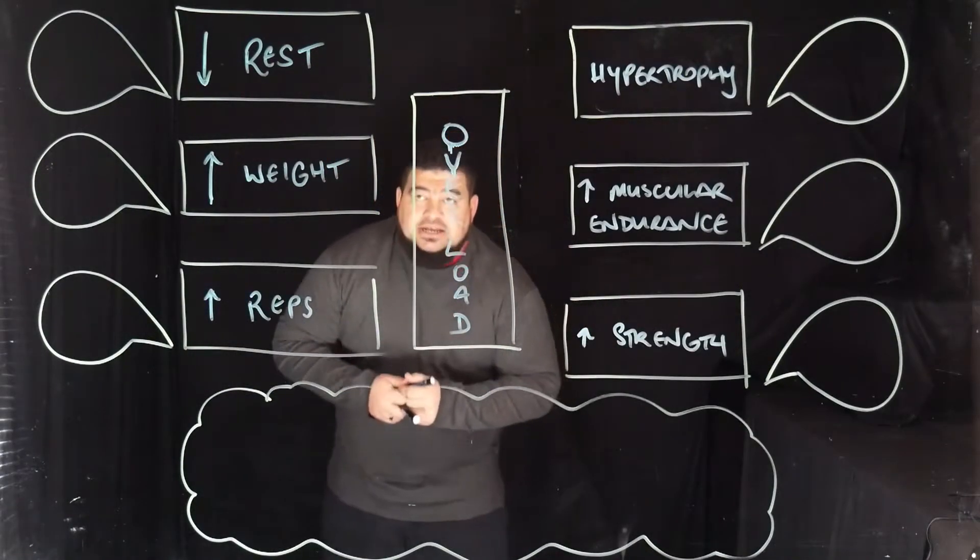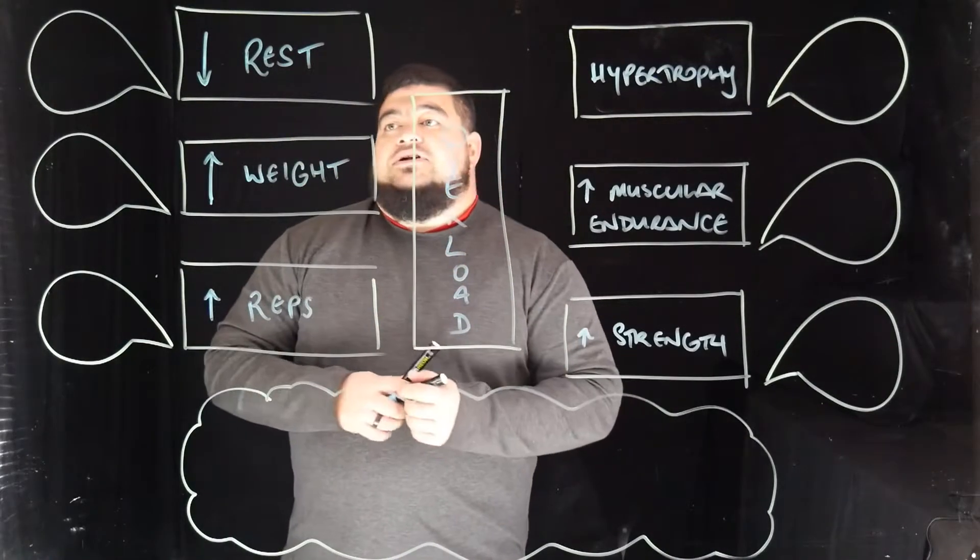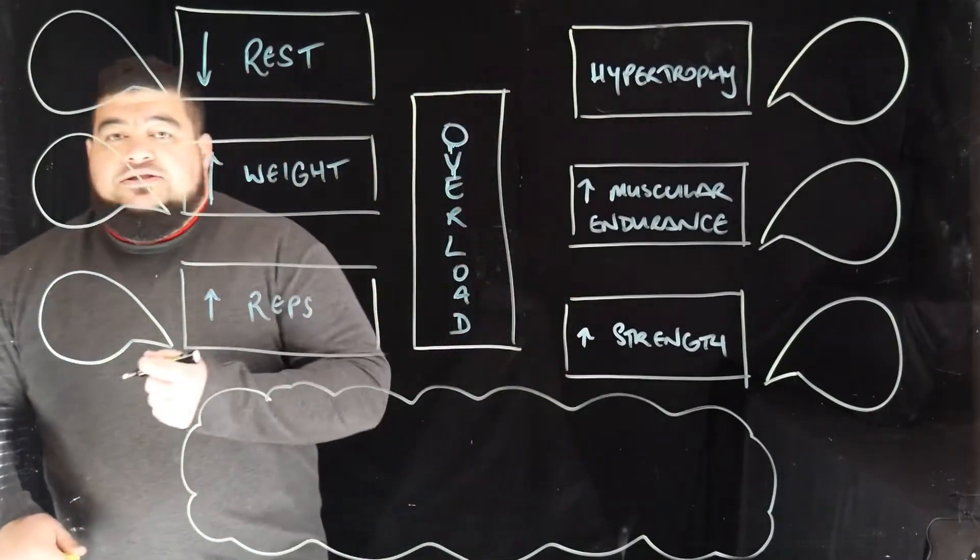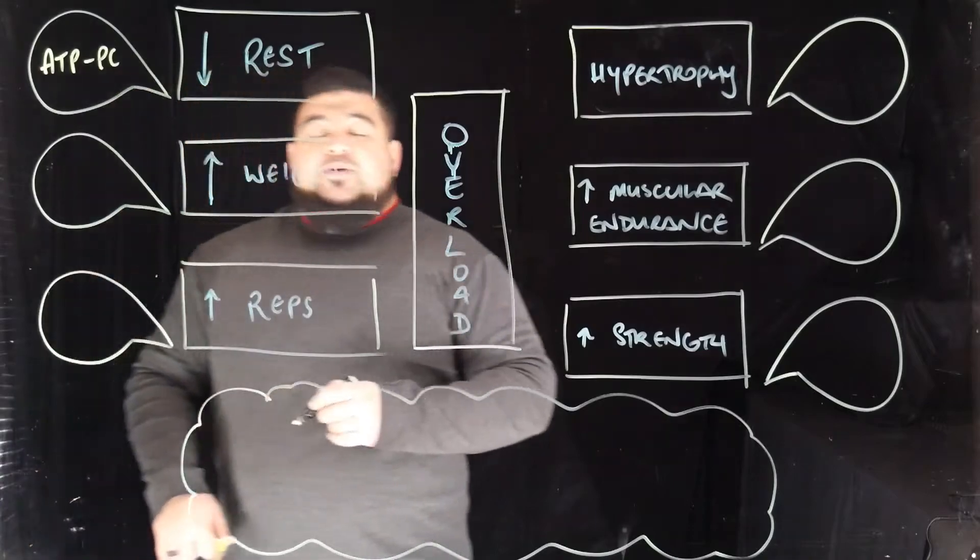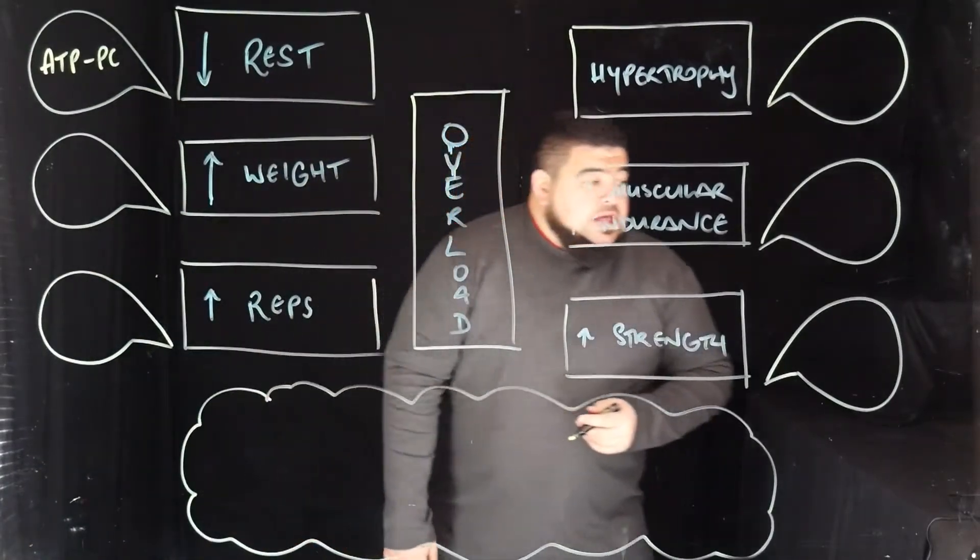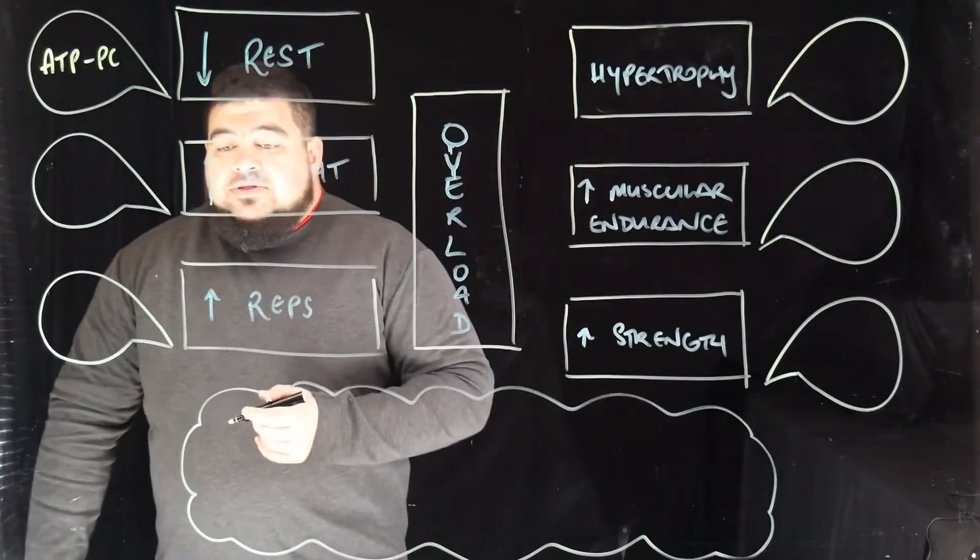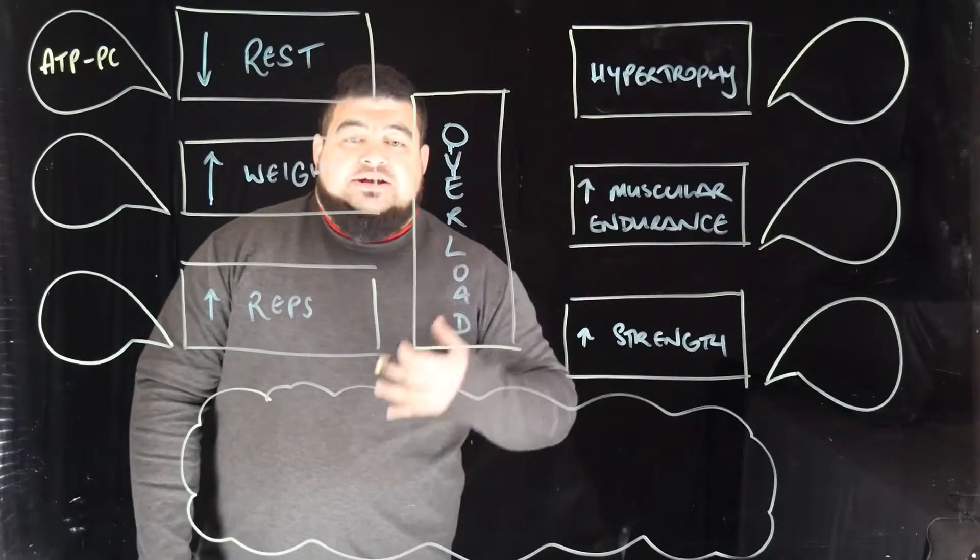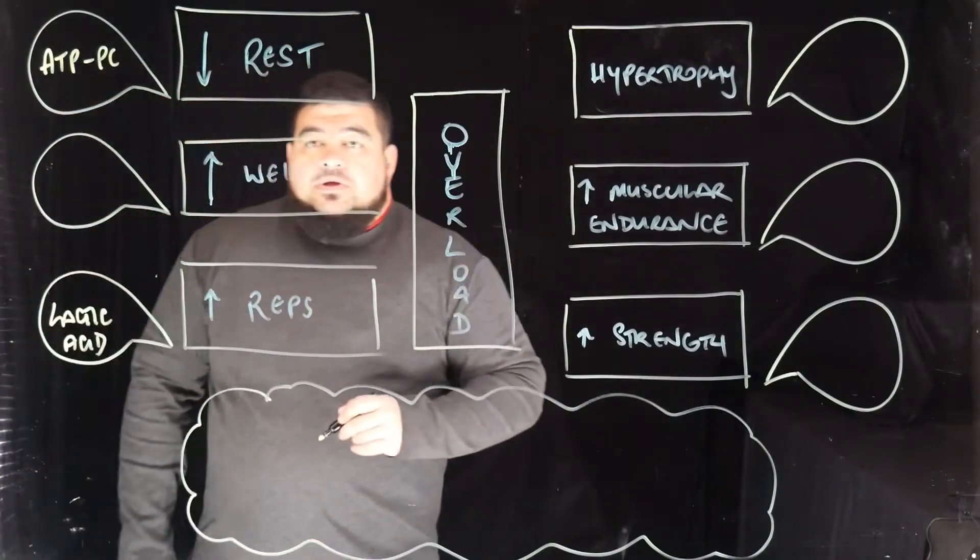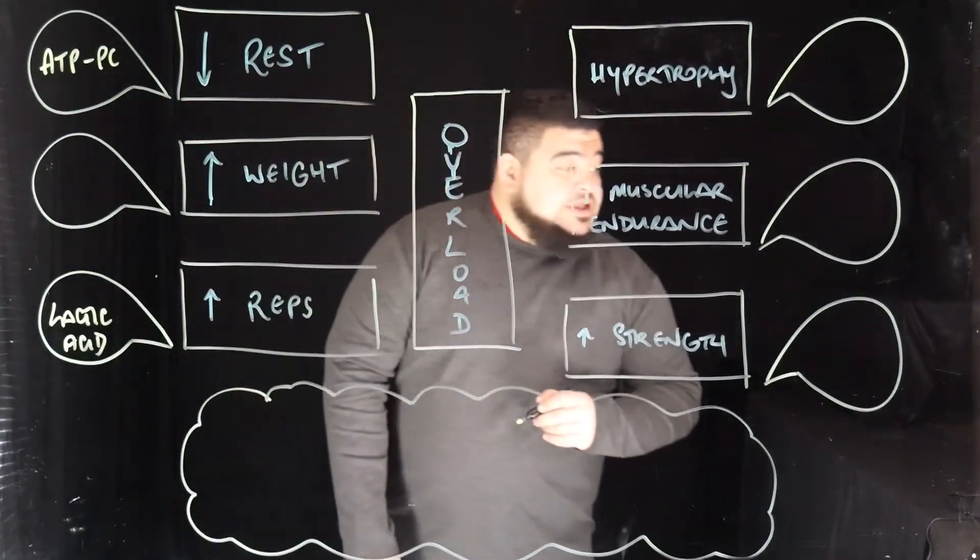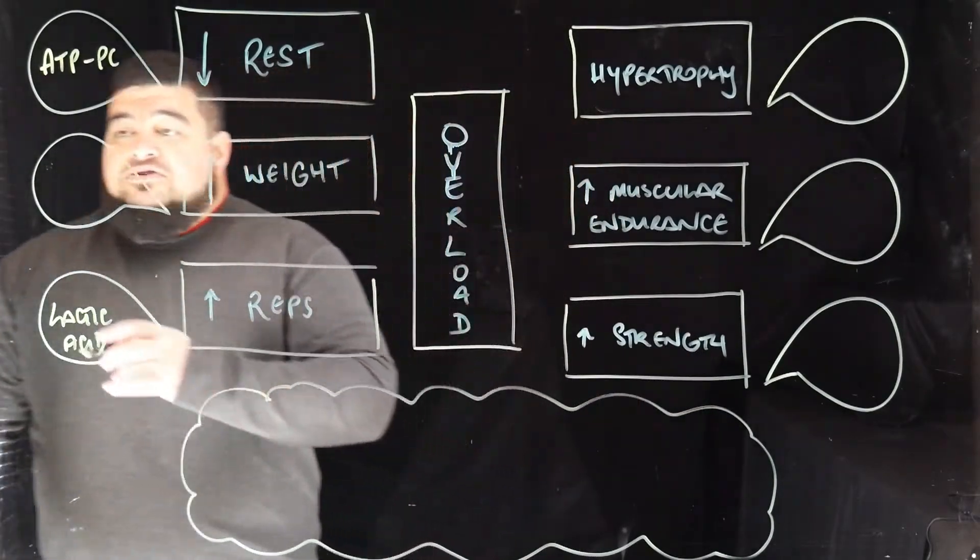Why does this happen? Why do we decrease our rest? The whole reason is to get around the ATP thing - so our ATP-PC doesn't have time to recover. When we increase our reps, we are putting more strain on the muscles and causing lactic acid buildup. And when we are increasing our weight, we're putting more stress on our central nervous system.